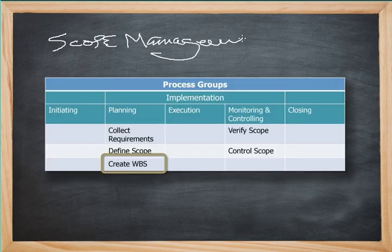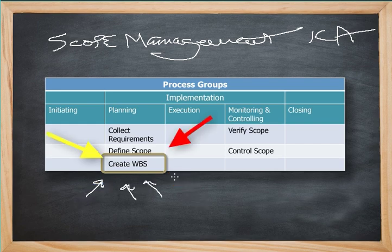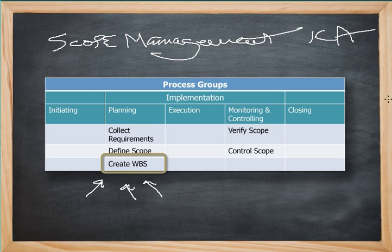The scope management knowledge area is centered around the definition of the project baseline — in other words, the WBS. In fact, there's a whole process in the planning process group dedicated to the creation of a WBS. Once the WBS is created and agreed upon, the scope associated with the WBS is monitored and controlled throughout the project's life cycle. The outputs of the collect requirements and defined scope processes should help create your WBS.